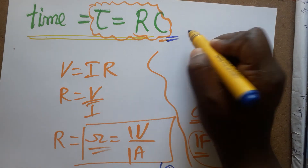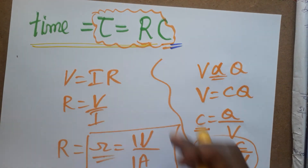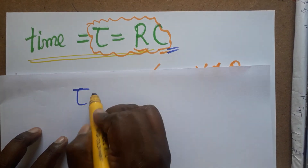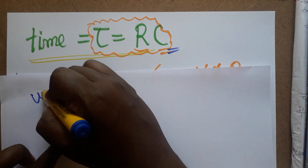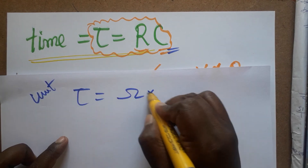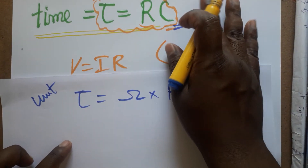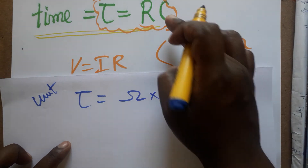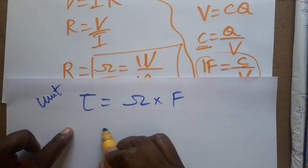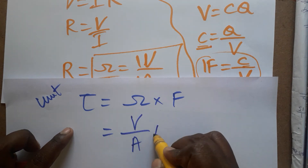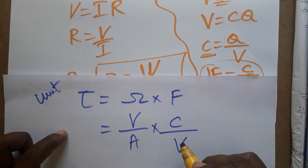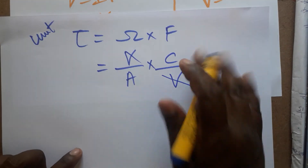Substituting, the unit of τ equals Ohms into Farads. The unit of resistance is Ohms = Volt per Ampere, and the unit of capacitance is Farad = Coulombs per Volt. The Volt in the numerator and denominator cancel out, leaving Coulombs divided by Ampere.